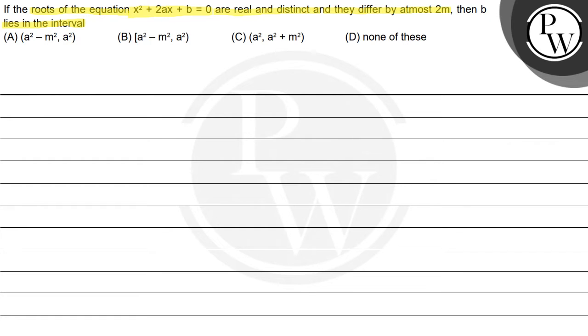So we have the equation x² + 2ax + b = 0, and its roots are real and distinct. The difference between the roots is at most 2m.